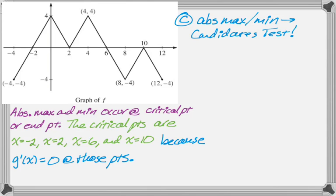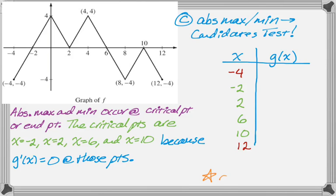So now what I usually do is set up a table. So my table has x and then g of x, and it's going to have the end points, all the critical points, and I'm going to try to figure out g for each of those, and I know that g of x is the integral from 2 to x of f of t dt, and I can go through and I can find all the areas, so I'm going to actually do that.